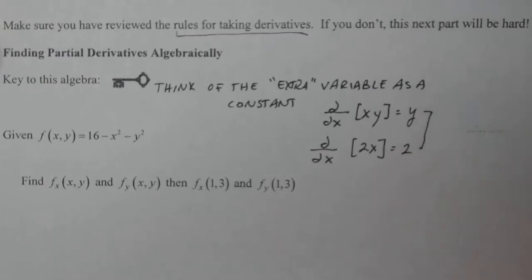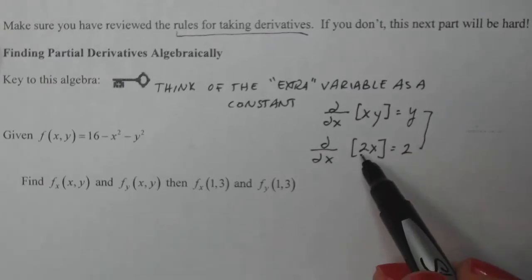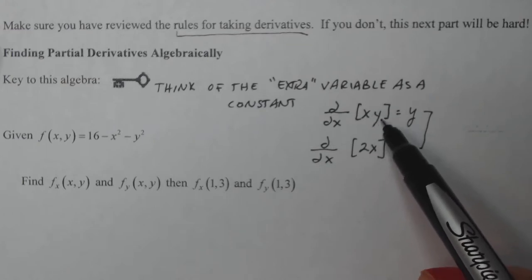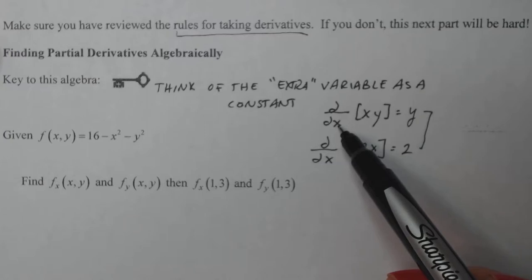So take a look at that example. This is how I would do it if I had an actual constant there. And then partial derivative requires me to think of the quote unquote extra variable that doesn't match this variable as a constant.